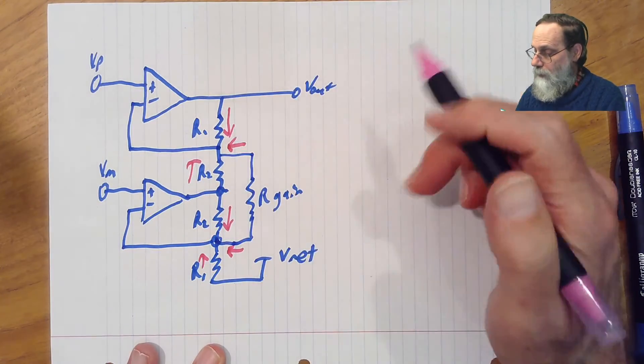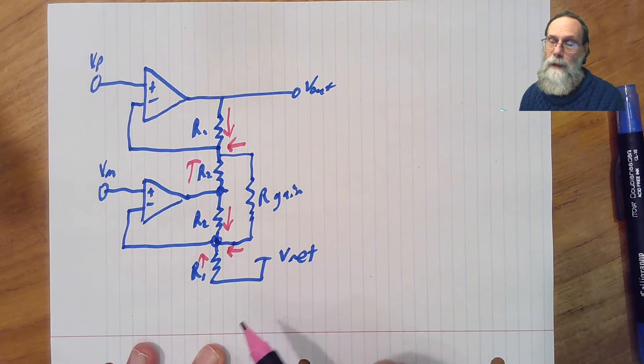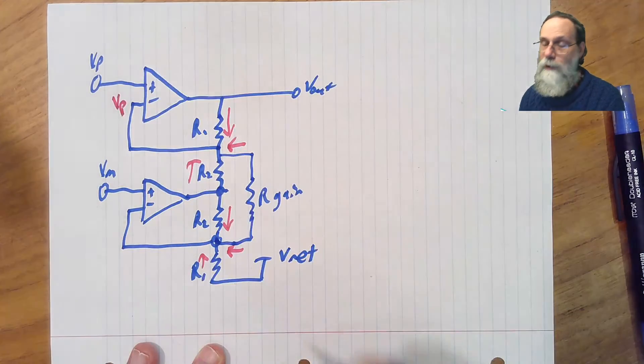For this node, that's just connected up to the negative input of this op-amp. It's in a negative feedback loop, so that's going to be pulled to the same voltage as the positive input.